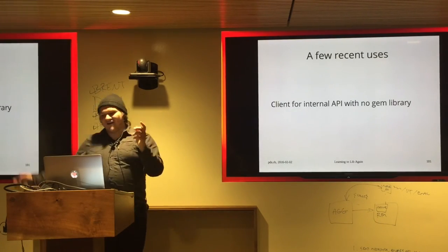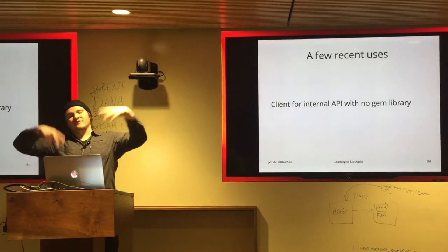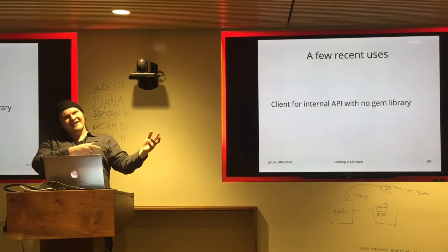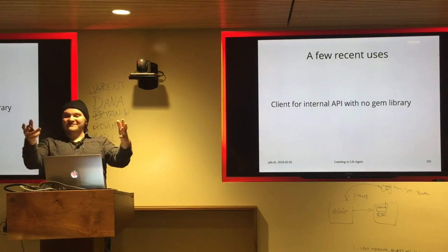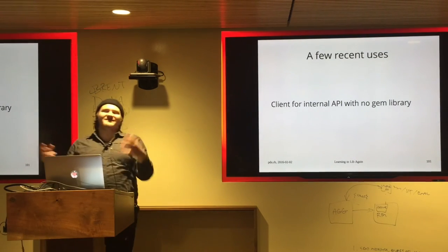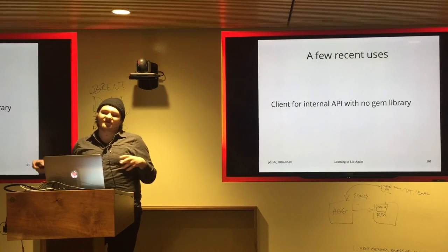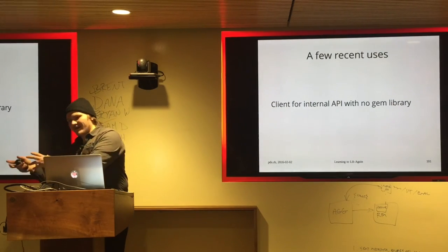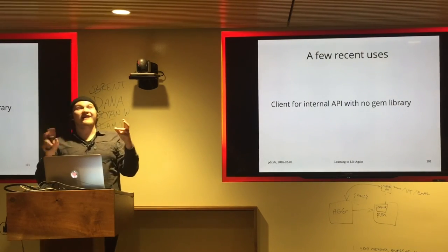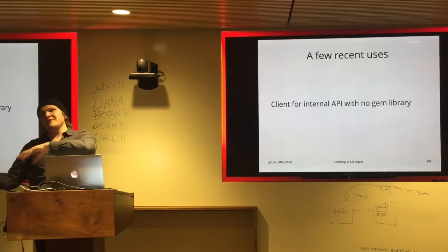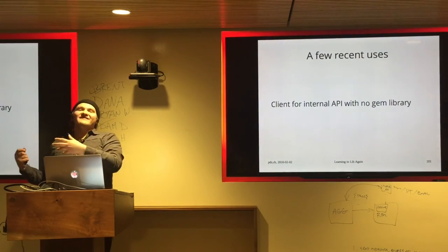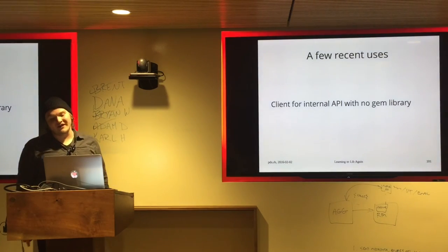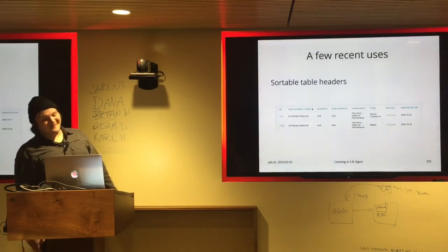Another project: we have an internal API written in PHP, so there's no Ruby gem. I put a client for it in lib, created the namespace, and wrote the code. Now when another Ruby project needs that code, I can just extract it into a standalone client gem and use it where needed.